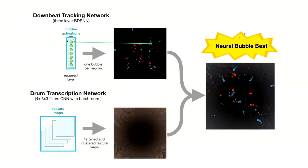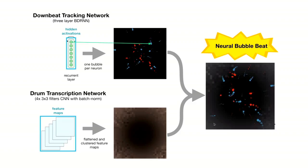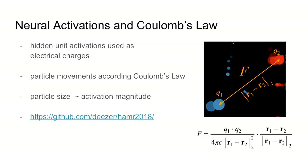From the drum transcription network we take the hidden activations, cluster them according to the activity, and move those into four corners. Each activation is represented by a single pixel, and those pixels control the background lightness. From the last recurrent layer of the beat tracking RNN, we take each neuron and create one of those bubbles or particles. The hidden activations of those units are interpreted as electrical charges, and we use those charges to simulate particle movement according to Coulomb's law.